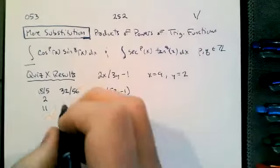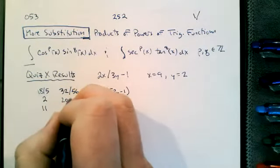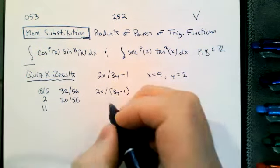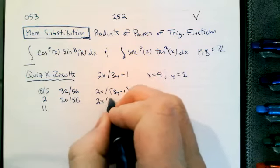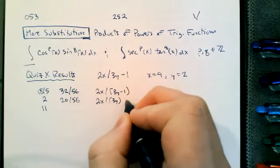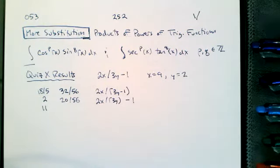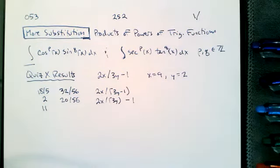The second most popular answer was 2, and 20 out of 56 of you answered 2 because you read the expression as 2x divided by 3y, and then subtracted the 1. The interesting thing about both of these readings is that neither one follows the standard rules for the order of operations — both of these strictly ignore PEMDAS.